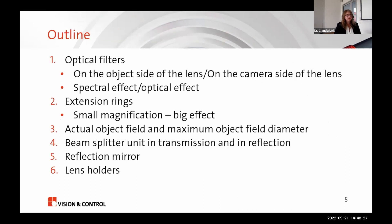Here is the outline of my presentation. First, I want to go into the effects which happen if you use optical filters on the object side or on the camera side — both spectral and optical effects. Then I will show you what happens if you use extension rings: a small magnification change but a big effect on working distance. Then I'll cover the relation between the actual object field and the maximum object field diameter of a telecentric lens.